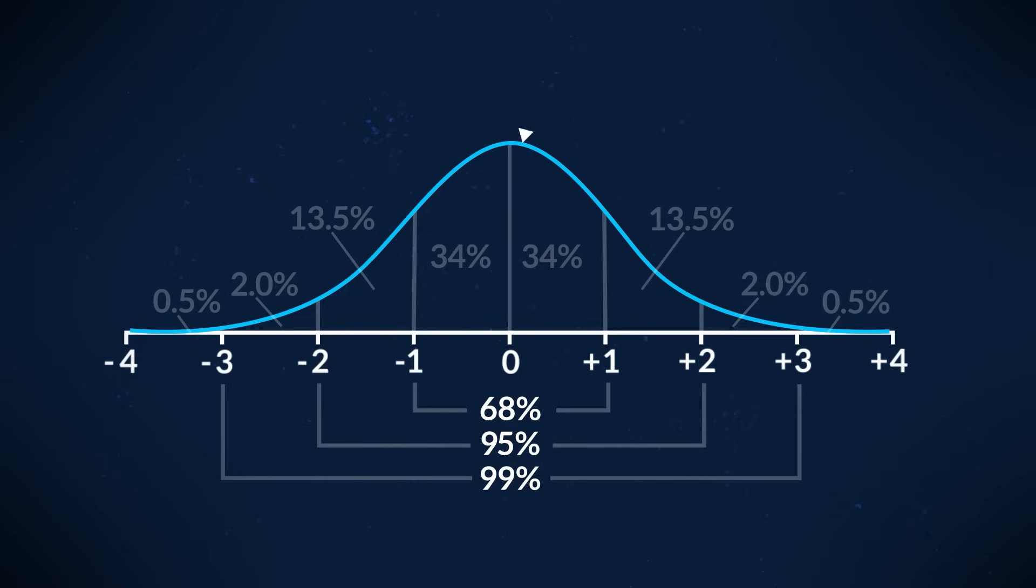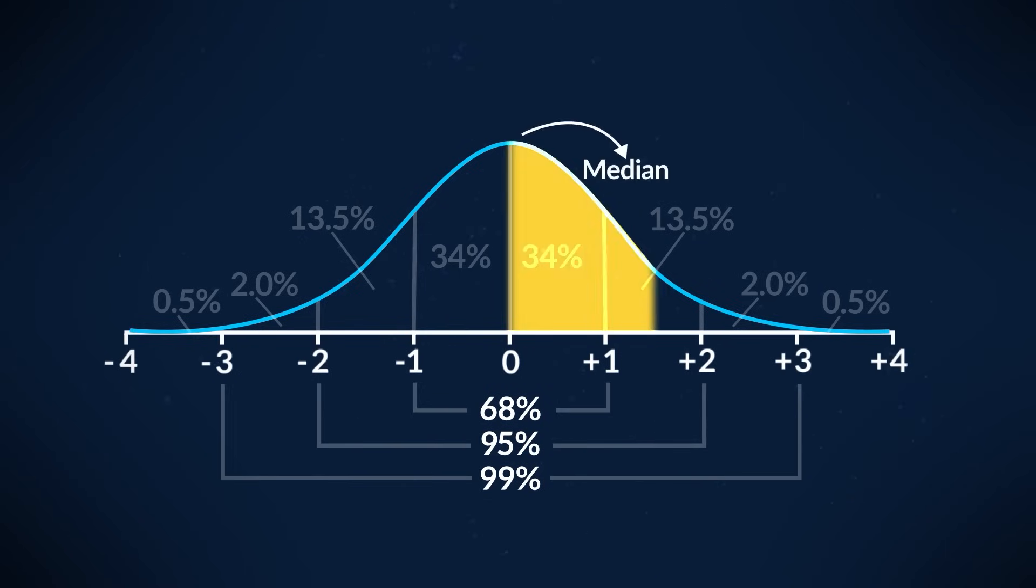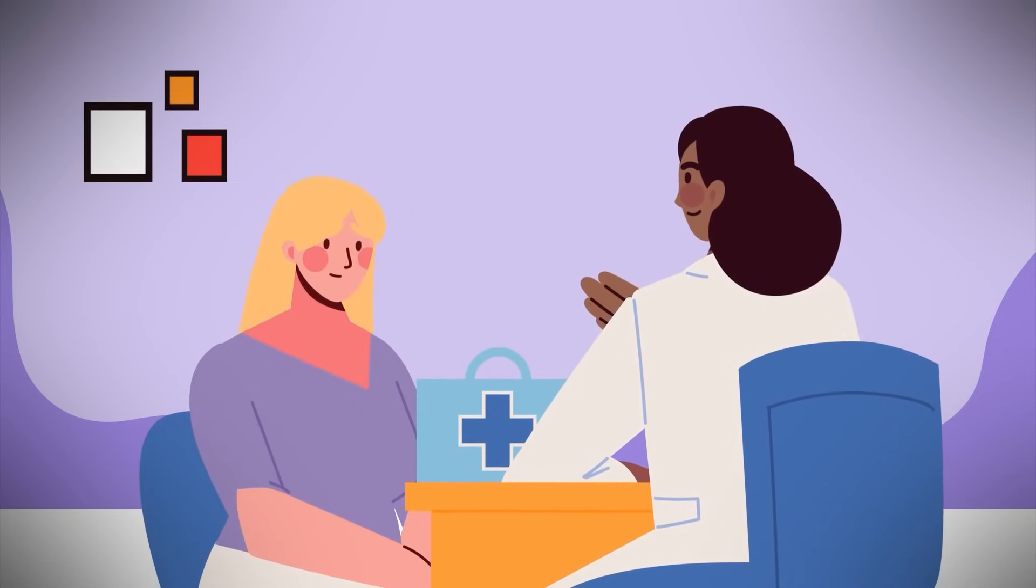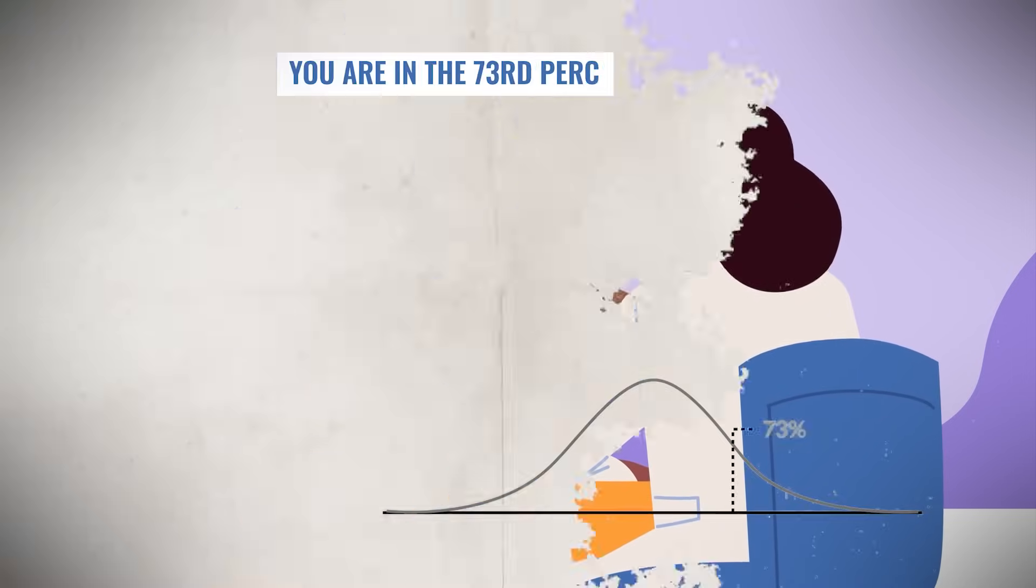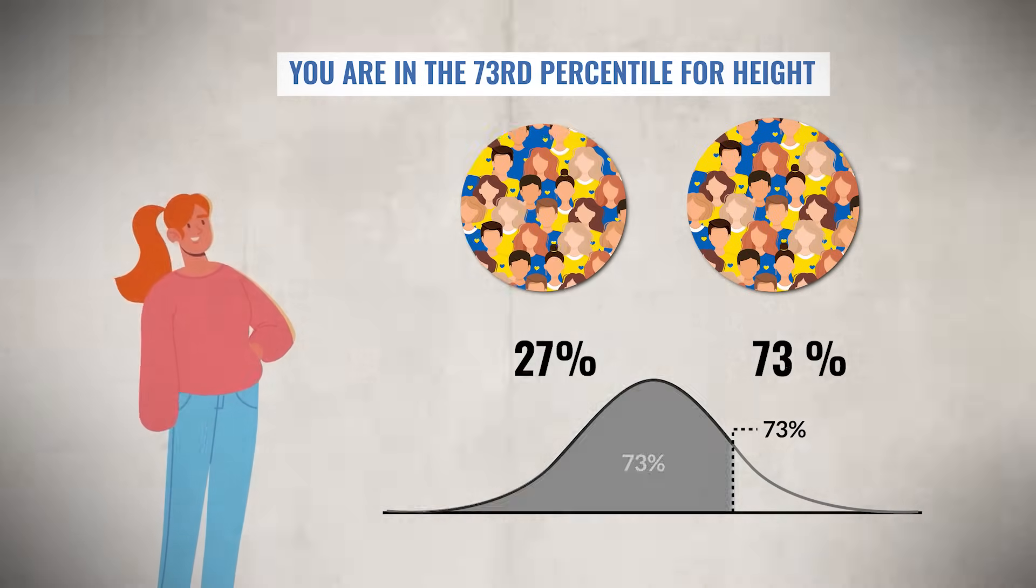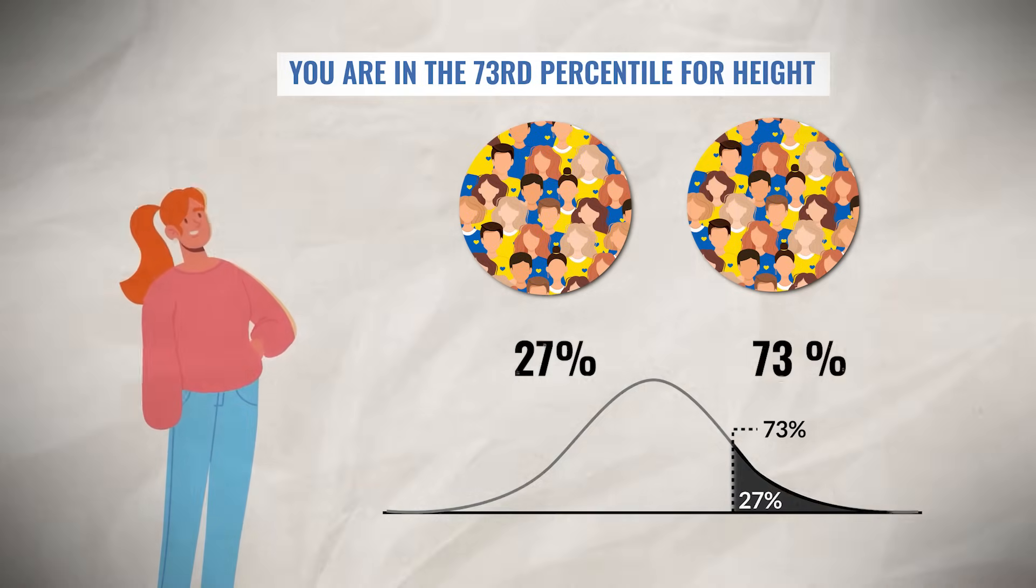When interpreting percentile ranks, remember that the median is the 50th percentile. This means that half the data falls above it and half below it. Look at an example of percentile rank to make sure it's making sense. Say you went to the doctor and you find out that you are in the 73rd percentile for height. This means that 73% of people your age are shorter than or equal in height to you, while 27% of people your age are as tall or taller than you.